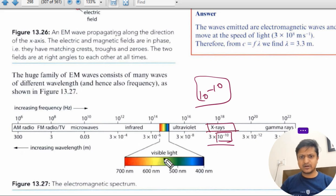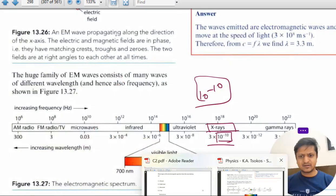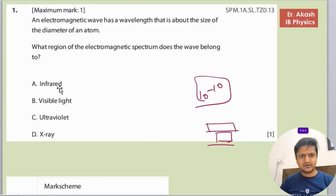So in our question it is given infrared, visible spectrum, ultraviolet, and x-rays. So 10 raised to power minus 10 will be of the x-rays.